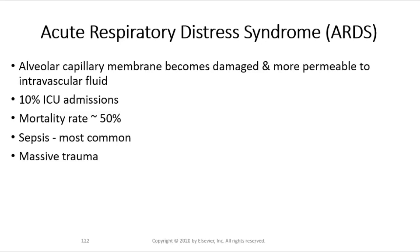Now let's talk about acute respiratory distress syndrome (ARDS). With ARDS, we lose the ability for our alveoli to participate in gas exchange. The capillary membrane becomes damaged and more permeable, allowing fluid to leak into the alveoli — making it like a cotton ball dipped in water. Ten percent of all ICU admissions were for ARDS pre-COVID, with a 50% mortality rate. Sepsis is the most common cause. Remember, it's not necessarily a lung issue at its start — it generally comes from a systemic disorder.